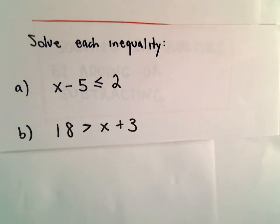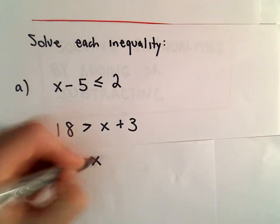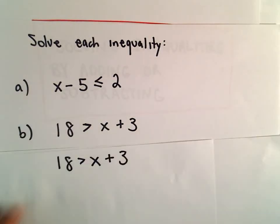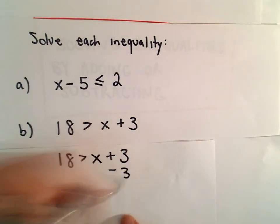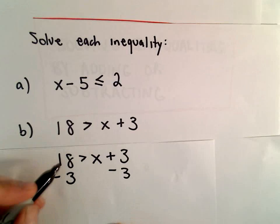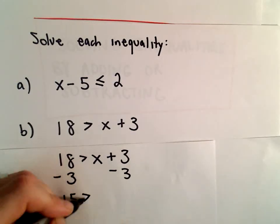Part B, exact same idea. It doesn't matter at all that the x is on the right side. I want to isolate the x, so since we have x plus 3, we can subtract 3 from both sides. 18 minus 3 is 15. We'll keep our greater than sign.